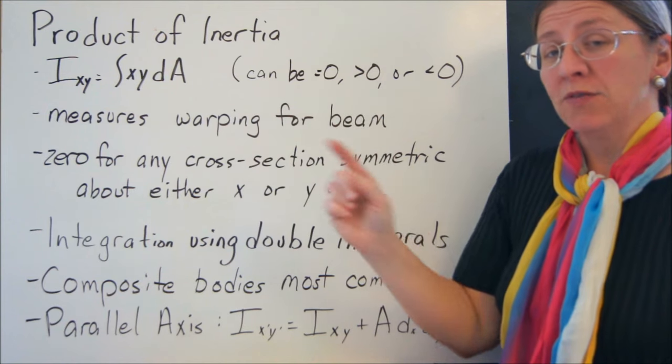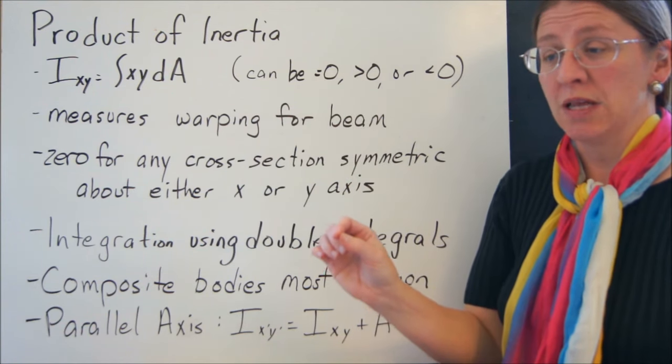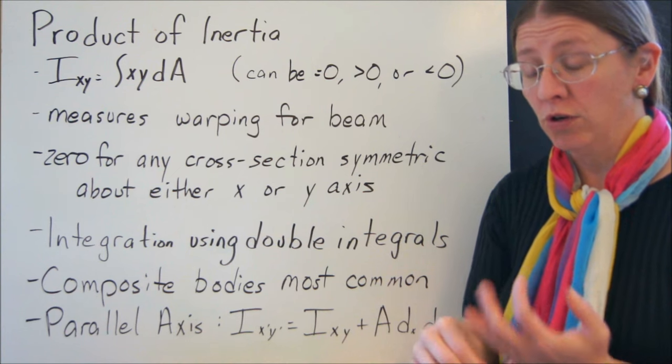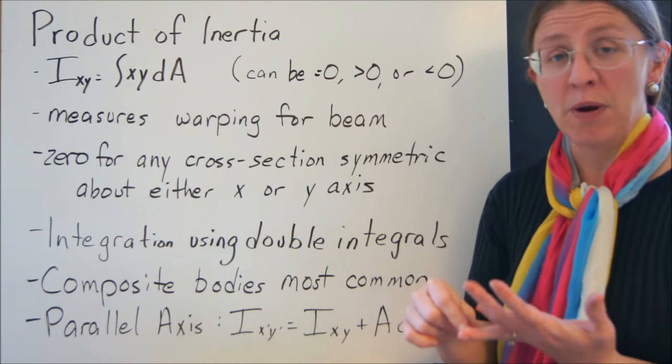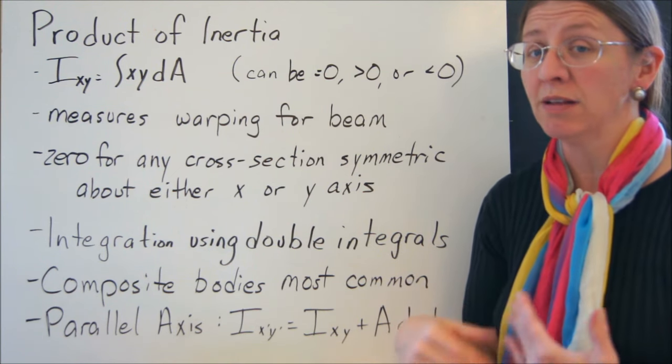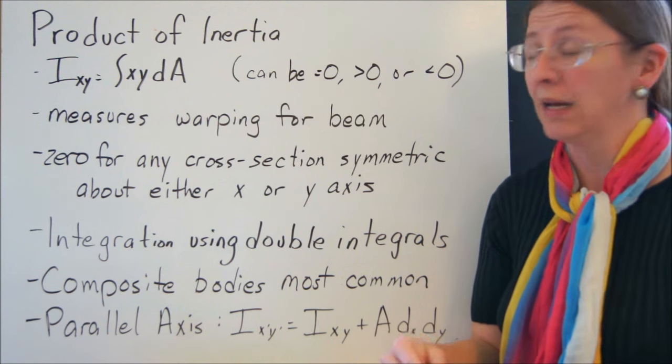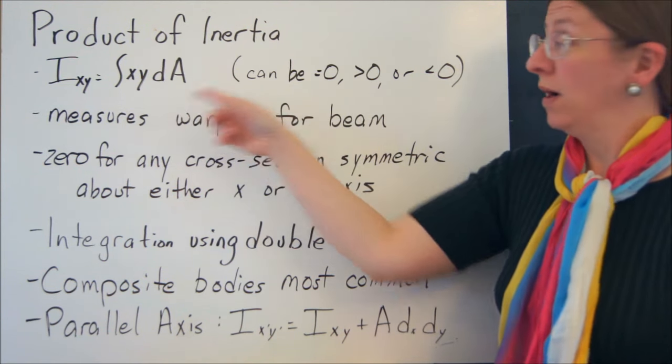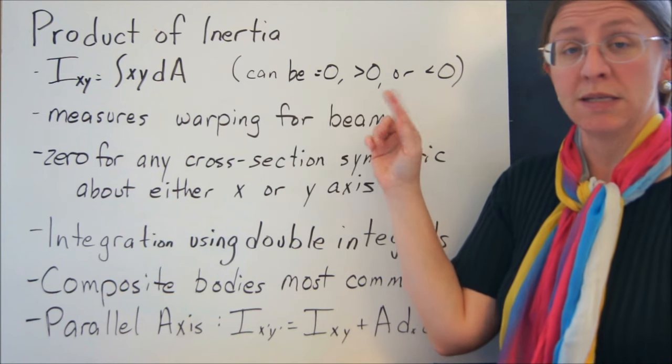The difference, one of the big differences between this and the moments of inertia is that a moment of inertia is always positive. You've got x squared in your integral and even in the parallel axis theorem, d squared times A. So nothing that's ever there is going to be zero or negative. But this one, because you've got x, y and they're not squared, these can be zero, greater than zero, less than zero either way.